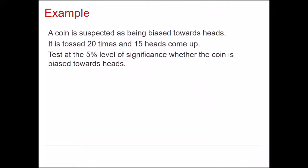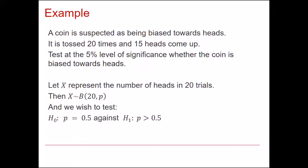So here's an example of a hypothesis test carried out. We suspect a coin of being biased towards heads. We toss it 20 times and we see that 15 heads appear. We want to test this 5% significance level whether the coin is biased towards heads. So this is obviously a binomial situation if the probability remains constant throughout. So we have the binomial distribution with N is 20.